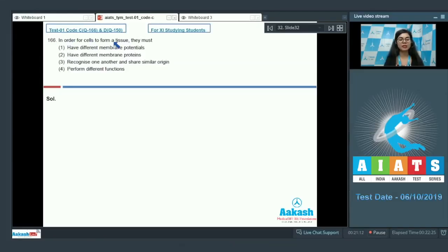Question 166: In order for cells to form a tissue, they must have different membrane potentials, have different membrane proteins, recognize one another and share similar origin, or perform different functions.